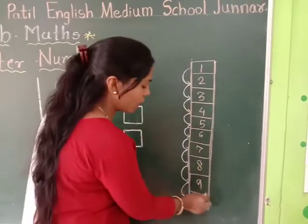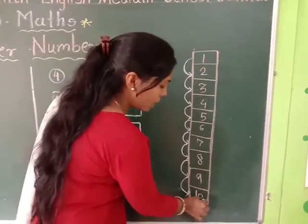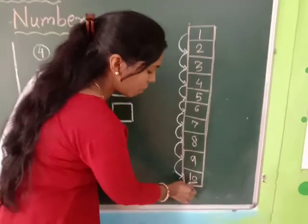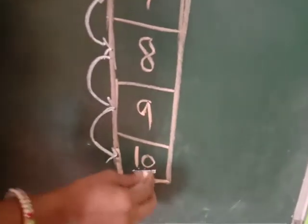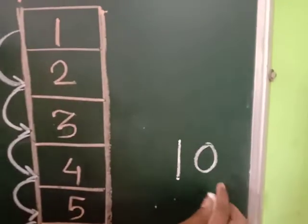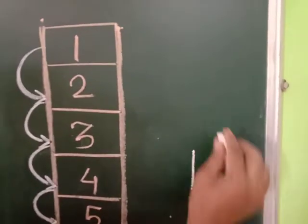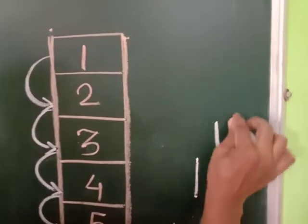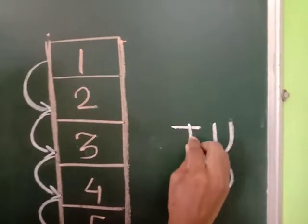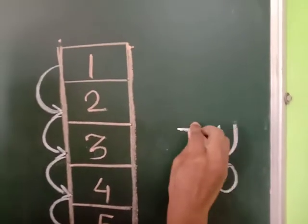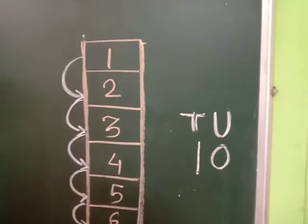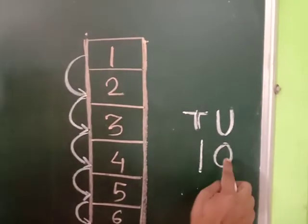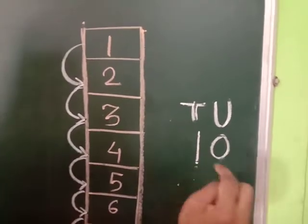And after 9, number 10. Now see here — this is number 10 and this is a 2-digit number. In this number there are 2 digits. This is units place and this is tens place — as you already learned in your junior KG class. So this is units place and this is tens place.